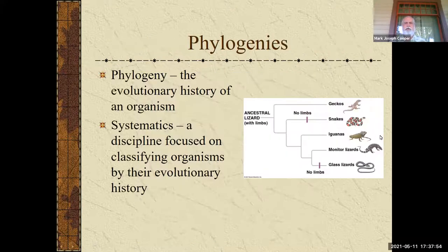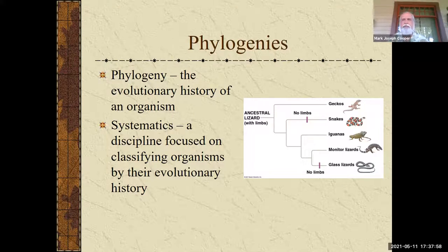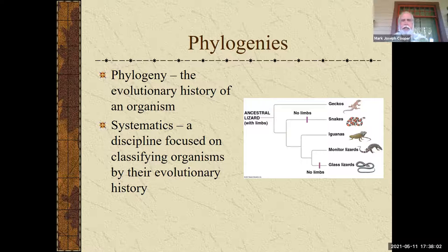Phylogeny is really the evolutionary history of an organism, and there are different ways to look at this. The discipline focused on this is called systematics.